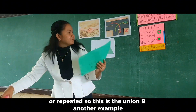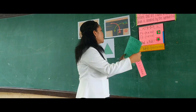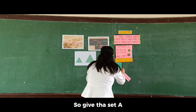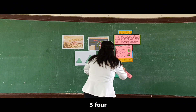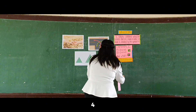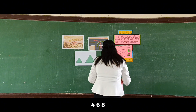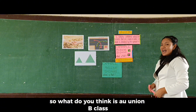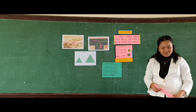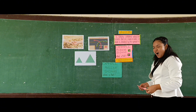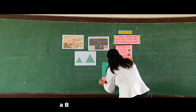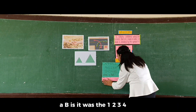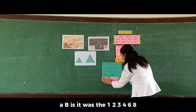Another example: given set A = {1, 2, 3, 4} and B = {3, 4, 6, 8}, so what do you think is A union B, class? Alright. A union B = {1, 2, 3, 4, 6, 8}.